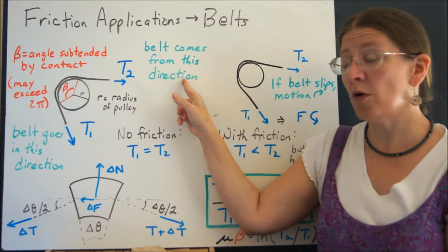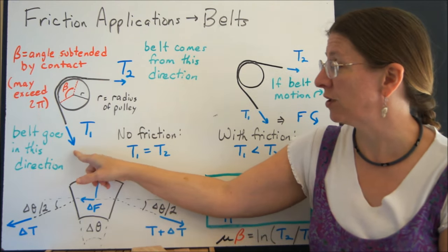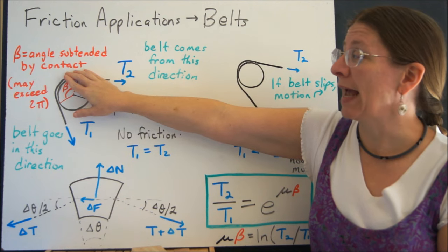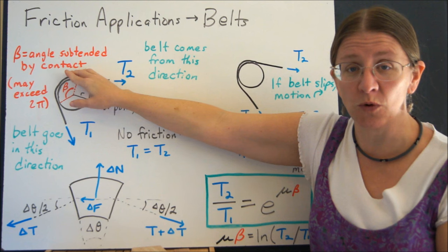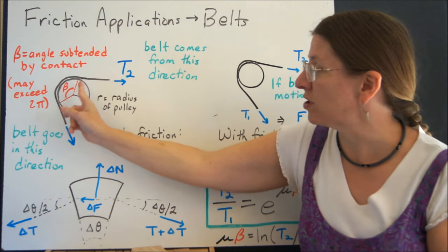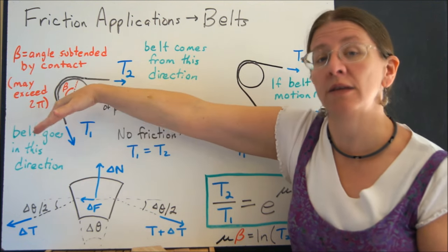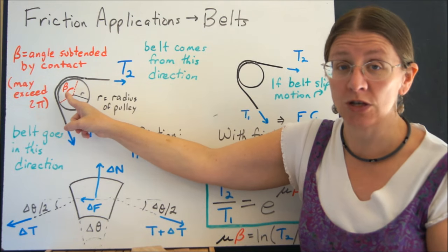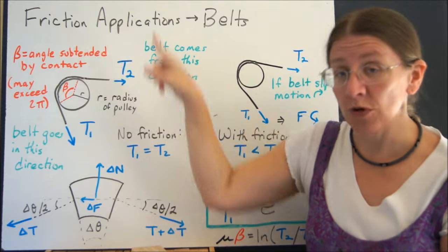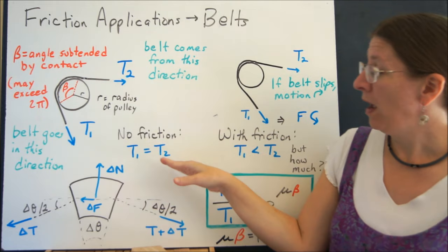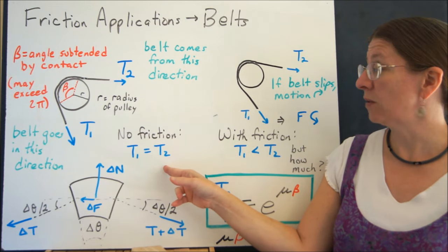So the belt is coming from over here, it's going in this direction. Beta is the angle subtended by contact - well, not subtended, it's just a fancy word that says where is it touching? So it starts touching here, it goes around, and then it ends touching over there. The angle in here is called beta. That can be greater than 2π if the rope goes around a couple times. If there is no friction, T1 is equal to T2.